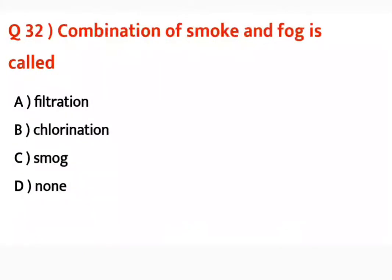Question number thirty-two: Combination of smoke and fog is called? Smoke aur fog jab aapas mein milte hain toh kya banate hain? Correct answer is smog.